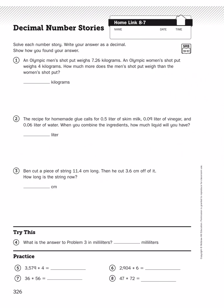We're on our homelinks, Unit 8, Lesson 7, and let's take a look at Problem Number 1. It says, an Olympic men's shot put weighs 7.26 kilograms. An Olympic women's shot put weighs 4 kilograms. How much more does the men's shot put weigh than the women's shot put?